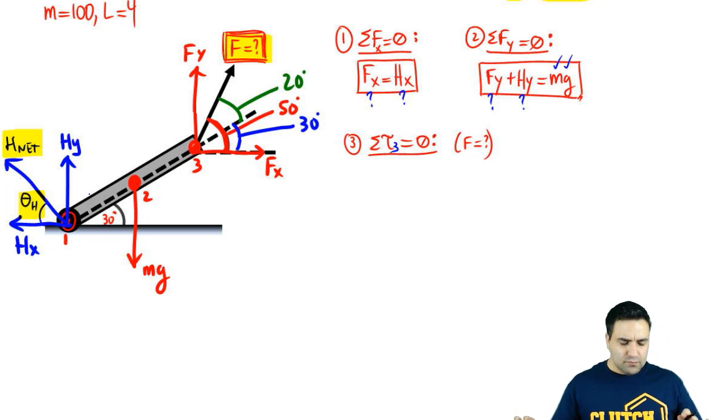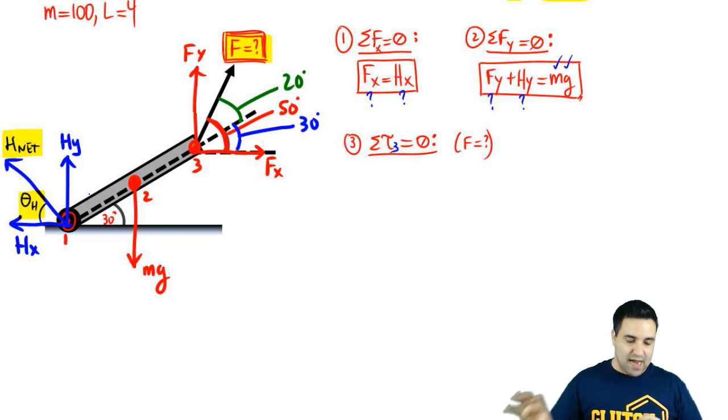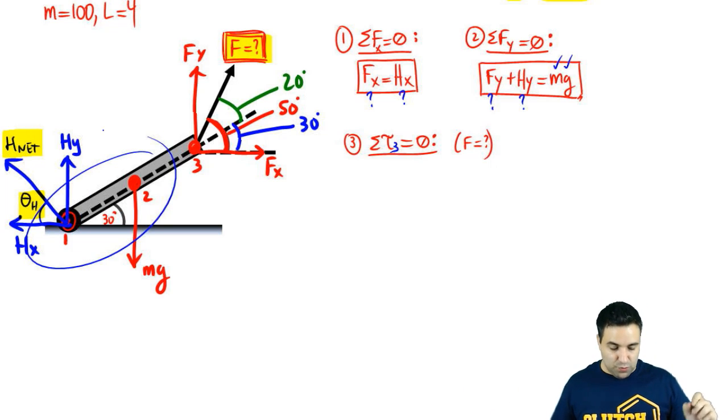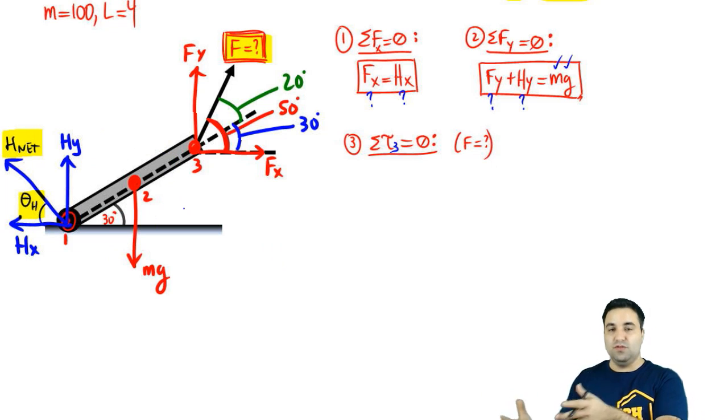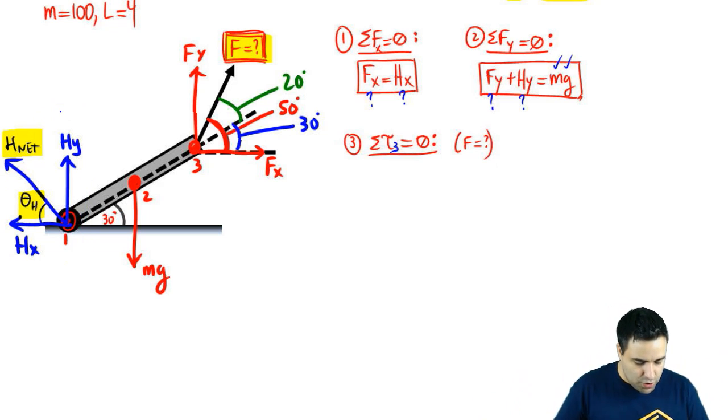And the whole point of writing an extra equation is so you can solve for F. So you want an equation where F is on the equation. So to do that, you're going to write the torque equation about point one or two. Those are much better choices. The first rule is to write the torque equation on an axis away from your target variable. The second rule is to pick out of the available options, if you have multiple, which we do, to pick a point with the most forces acting on it so that the most number of torques will be canceled. Basically, whatever's more complicated. So it's more complicated here. And we're going to write the torque about point one.